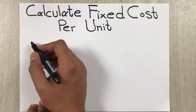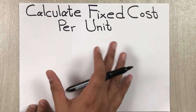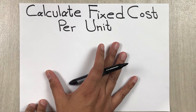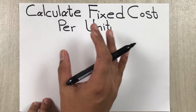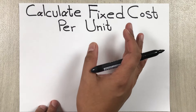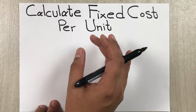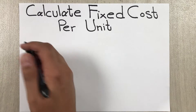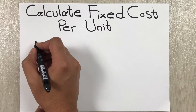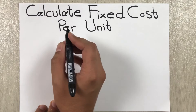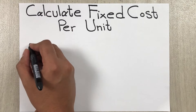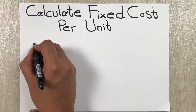Hello guys, I hope you are doing really well. In today's video, I am going to show you how to calculate fixed cost per unit. The formula to calculate the fixed cost per unit is equal to total fixed cost divided by total number of units produced.